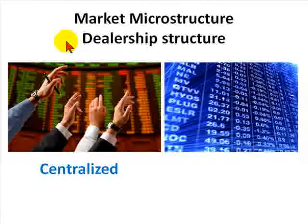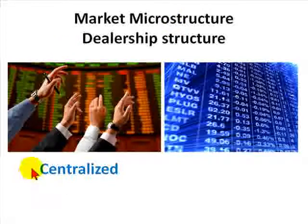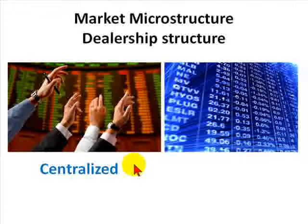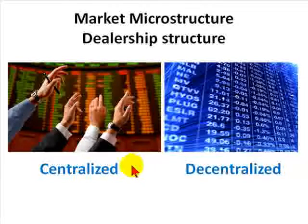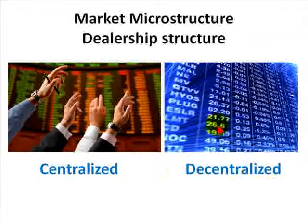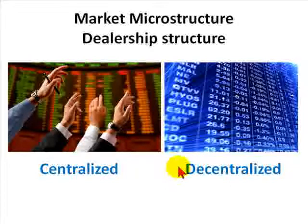First, the dealership structure refers to who provides the immediacy in the market. At one end of the spectrum, we have centralized markets, where a market maker is charged with maintaining a two-sided market. The classic example is the specialist on the New York Stock Exchange. At the other end of the spectrum, we have decentralized dealership structures, where without a market maker, buyers and sellers come together and conduct trades. The classic example here is the Chicago Mercantile Exchange or Chicago Board of Trade.